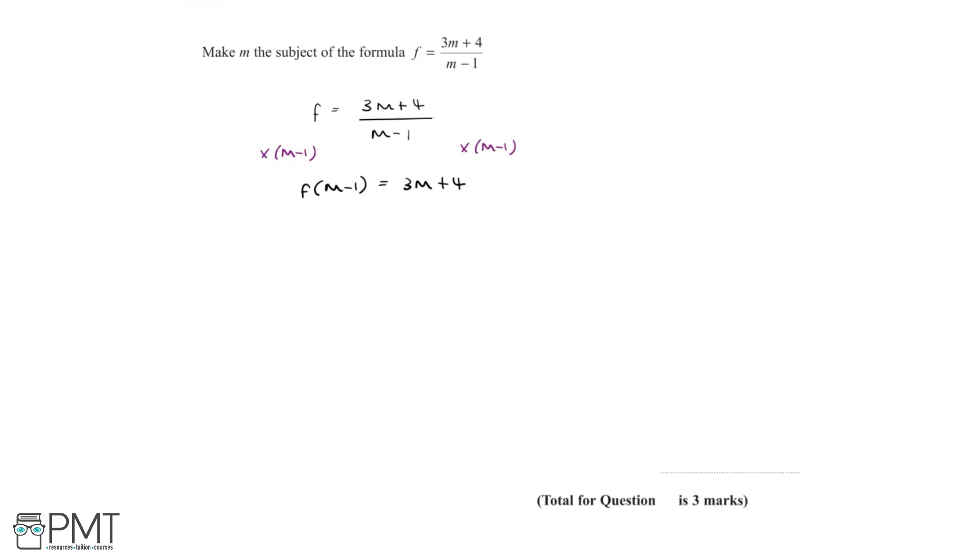Now let's expand these brackets. f multiplied by m minus 1 is equal to fm minus f equals 3m plus 4.